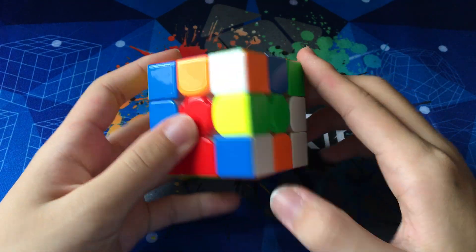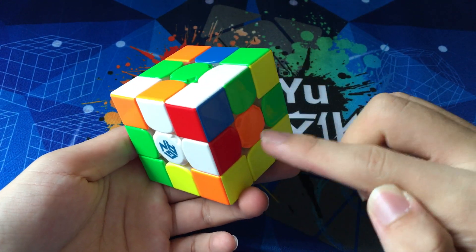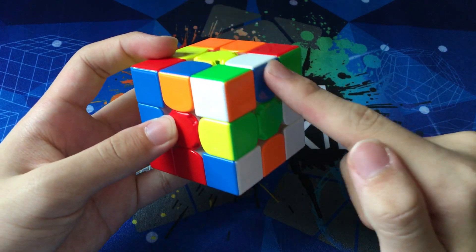Kyle's gonna start off on white cross, planning two pairs deep into the F2L. His cross pieces are here, here, here, and here.